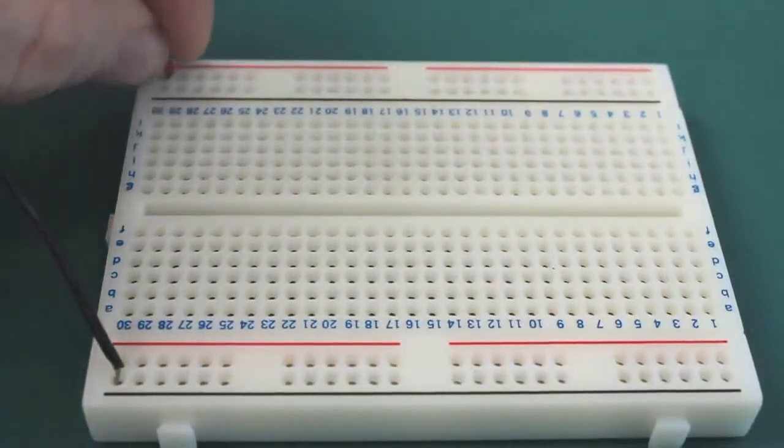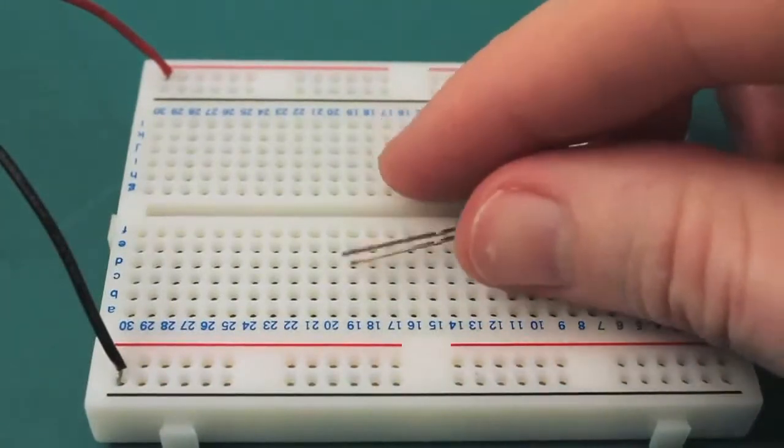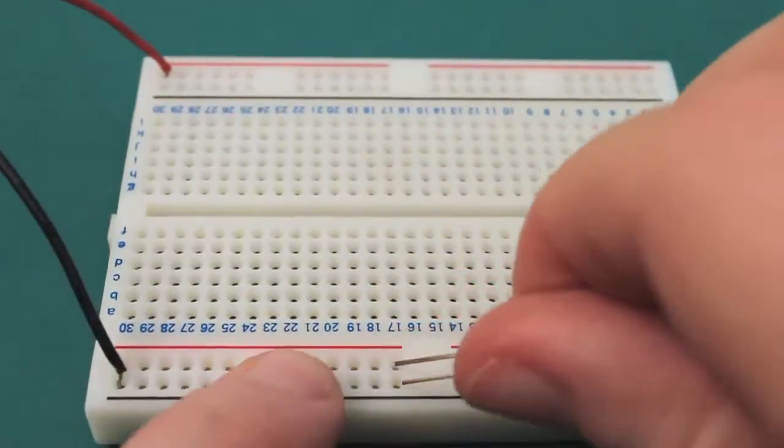Sometimes it's helpful to connect a switch into this arrangement too. For our first simple circuit, we'll connect an LED. Remember to connect the short leg to the negative side of the board.